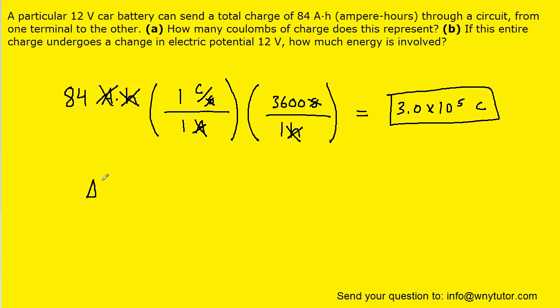For part B, we know that the change in the potential energy of a quantity of charge is equal to that quantity of charge multiplied by the potential difference across which the charge is moved. And so all we need to do is take the amount of charge that we obtained in part A and then multiply it by the given potential difference of 12 volts.